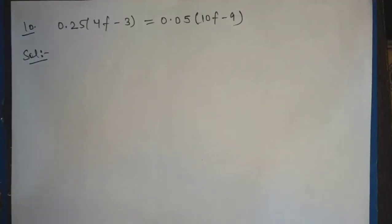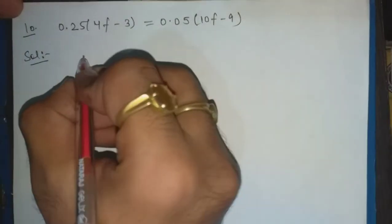Hello students, welcome to our channel. This is exercise 2.5, question number 10. The statement of the question is: 0.5(4f - 3) = 0.05(10f - 9). So we have to solve this equation.